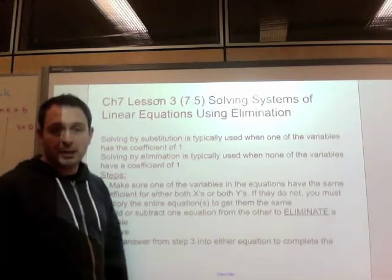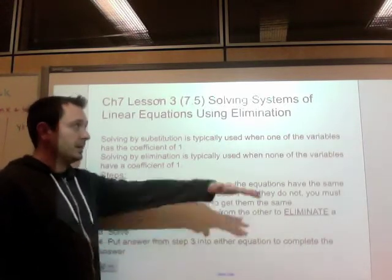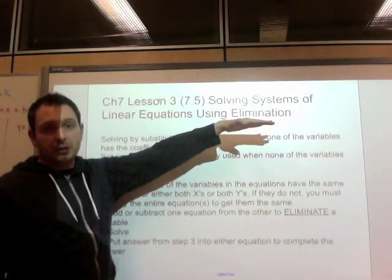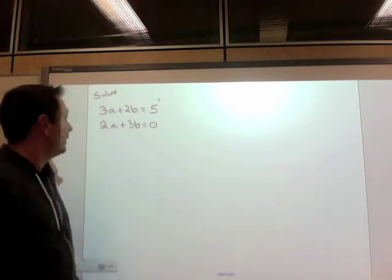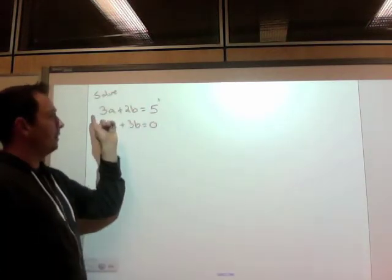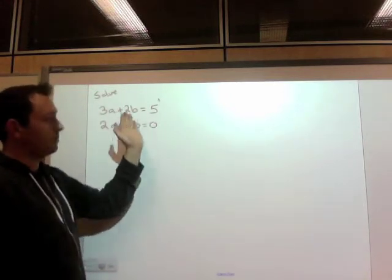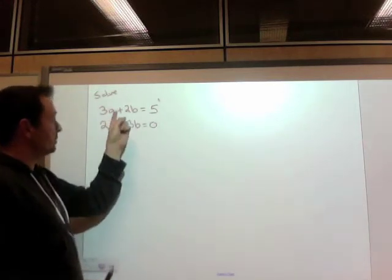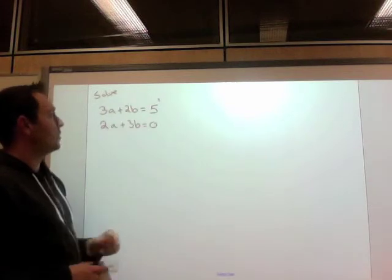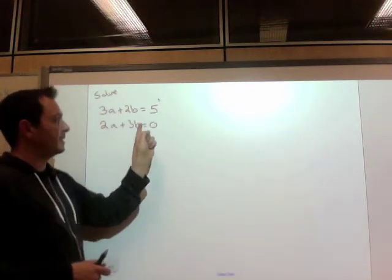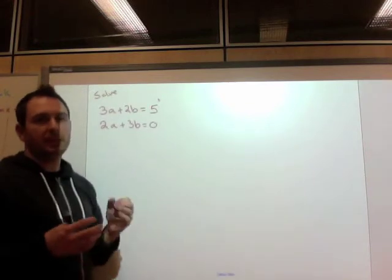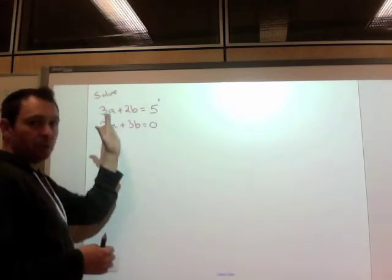The learning intention is to learn to use elimination for solving systems. So let's get right to an example. Solve this system. So we have two lines. That's what makes it a system. They're linear equations because the variables just have powers of 1. So 3a plus 2b equals 5, and 2a plus 3b equals 0.